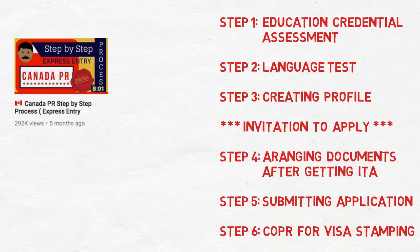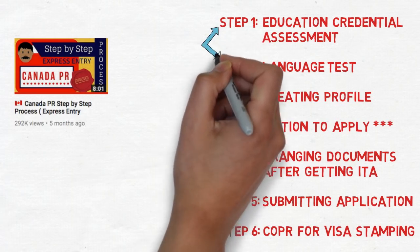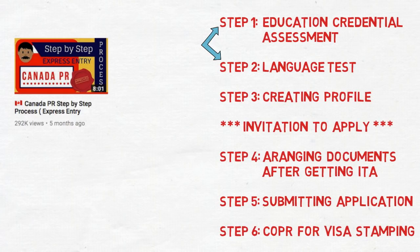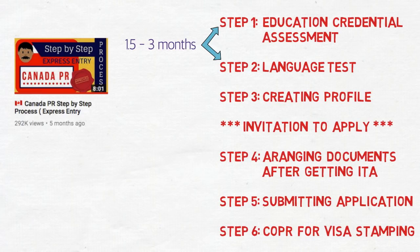The first two steps — ECA and language test — can be done simultaneously. They are totally independent of each other, so there's no need to wait for one step to complete before starting the next. Your ECA would take around 1.5 to 3 months, which is roughly the same amount of time you might take for your language test.